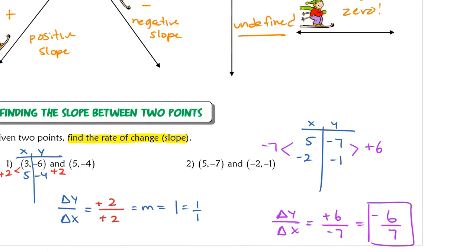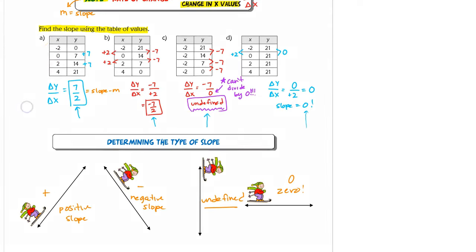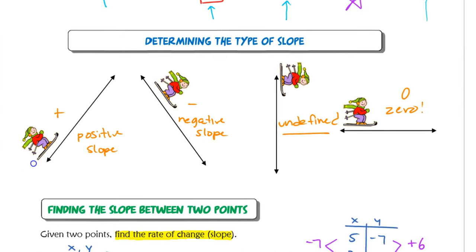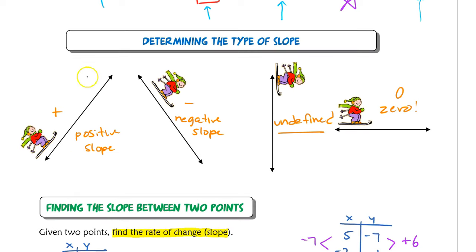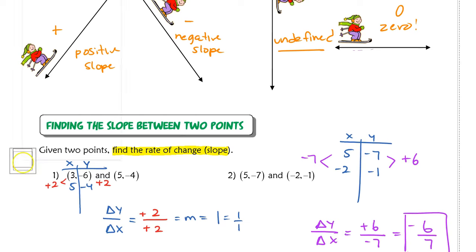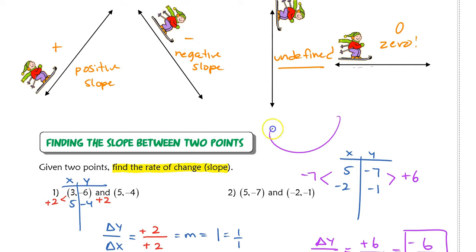To recap the full lesson: we started by finding the rate of change from a table, which is the same as slope. We encountered two new types: undefined rate of change and a slope of zero. We got a visual representation using the skier analogy for each slope type. Finally, we found the slope between two coordinate points by rewriting them as a table and finding the rate of change. Nice job — see you in class tomorrow.